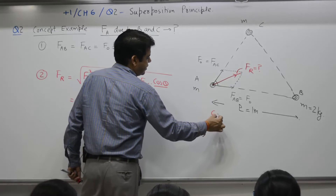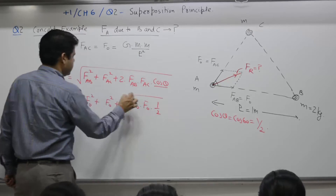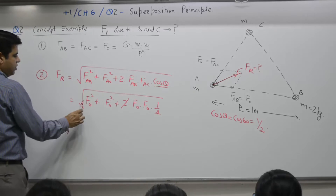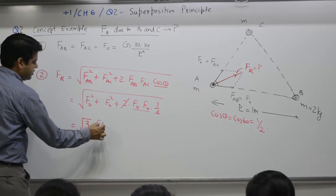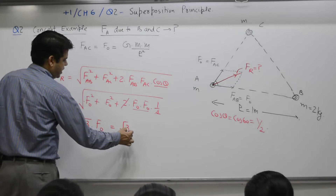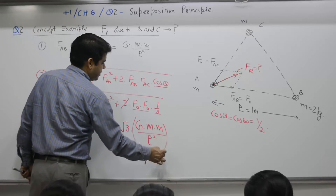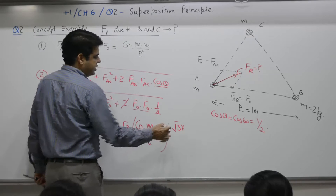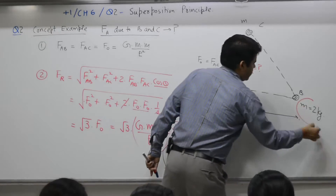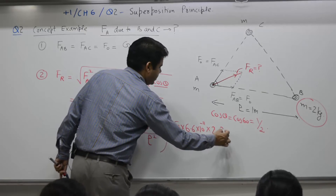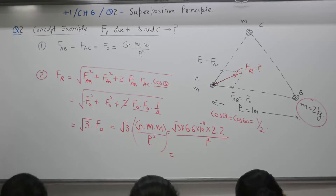Theta is 60 degrees, cos 60° = 1/2, so 2 cancels with 1/2, leaving 1·F₀² + 1·F₀² + 1·F₀² — three times F₀² — giving root 3·F₀. F₀ = G·M·M / L². So the resultant is √3 · G · (6.67×10⁻¹¹) · 2 · 2 / 1². Solve for the answer in 2 minutes.